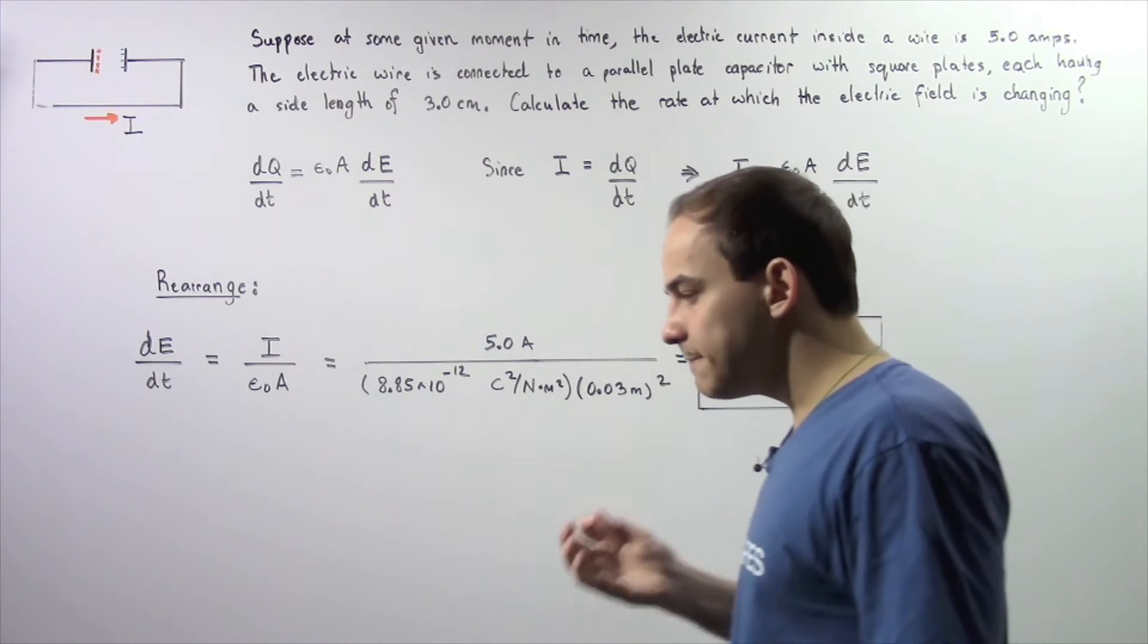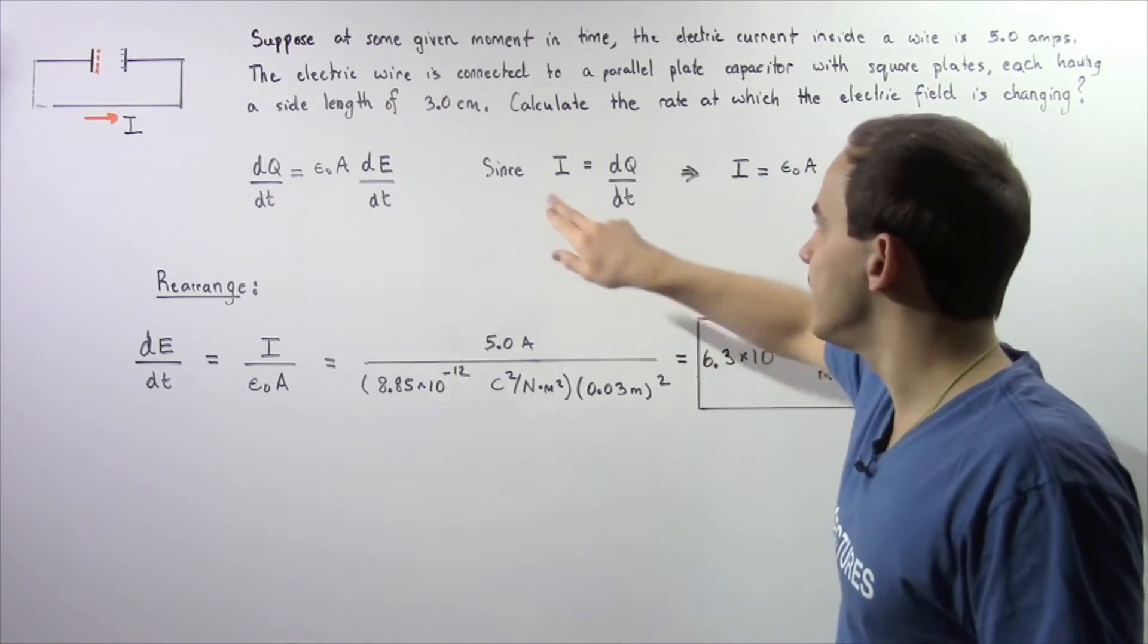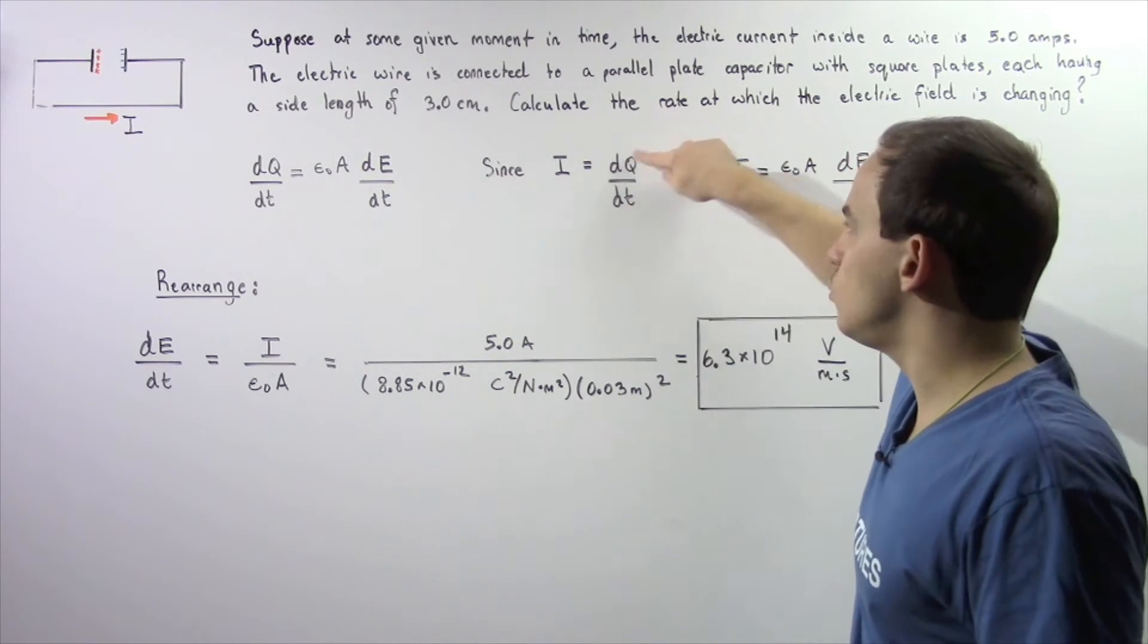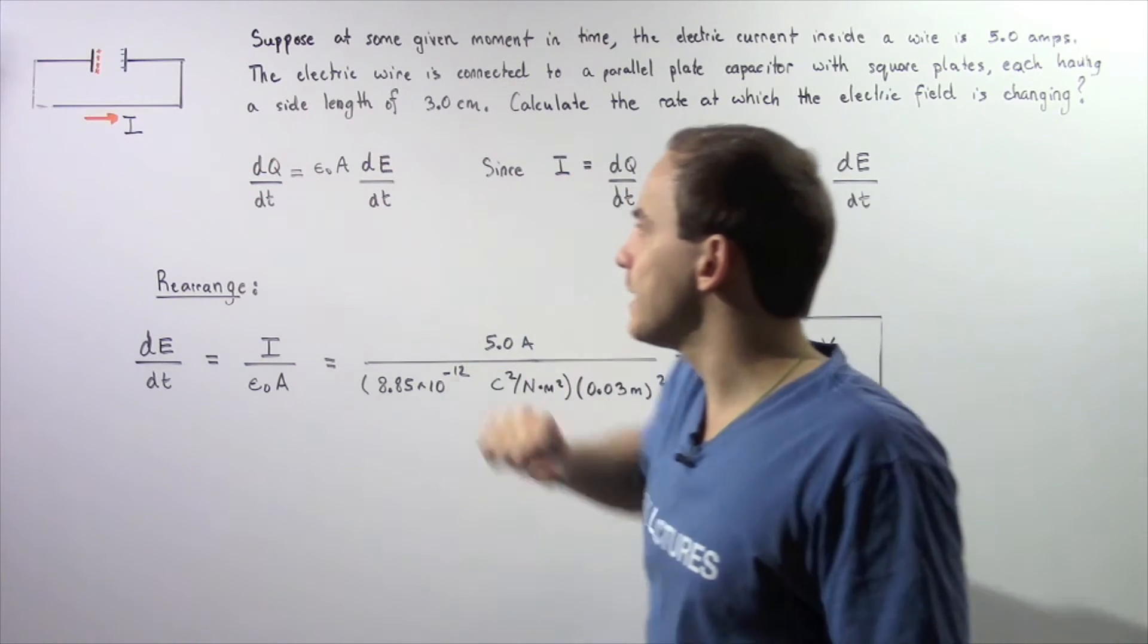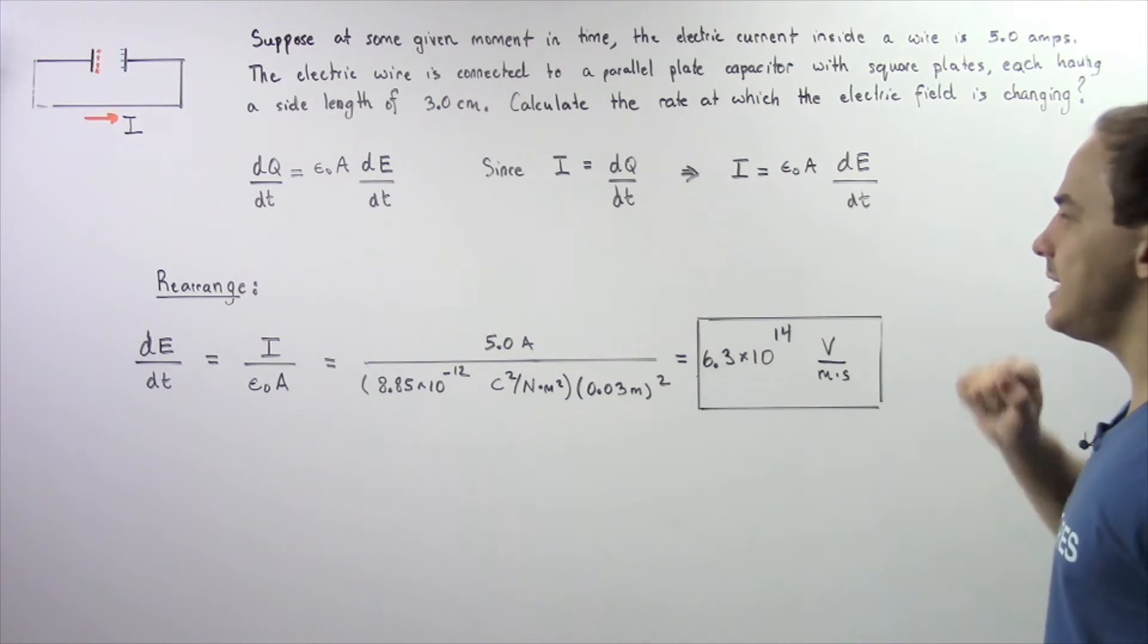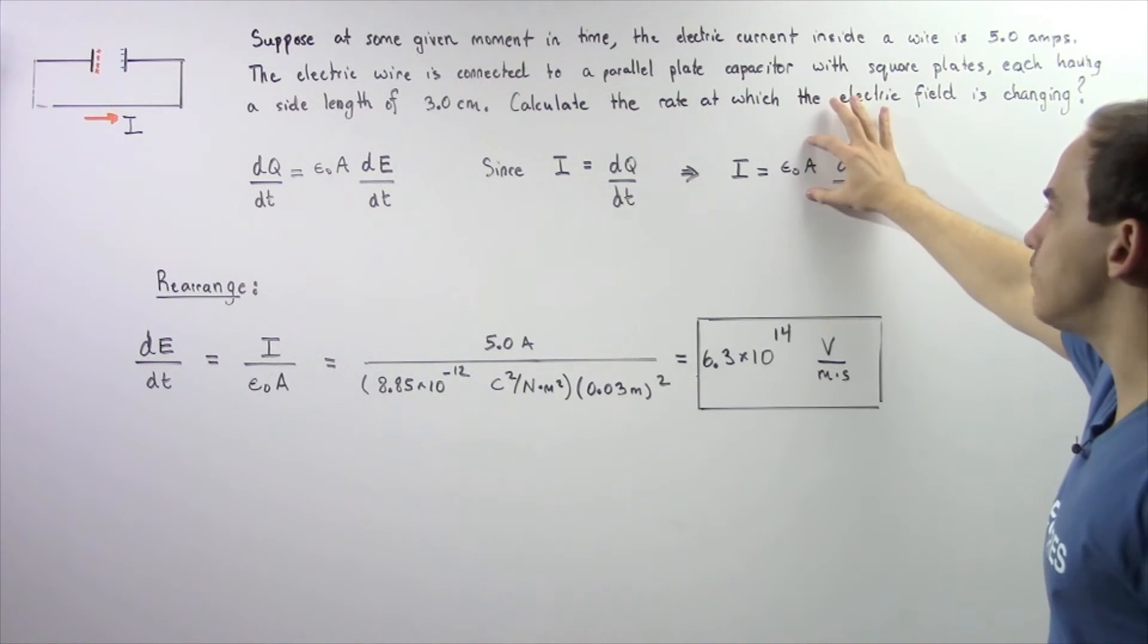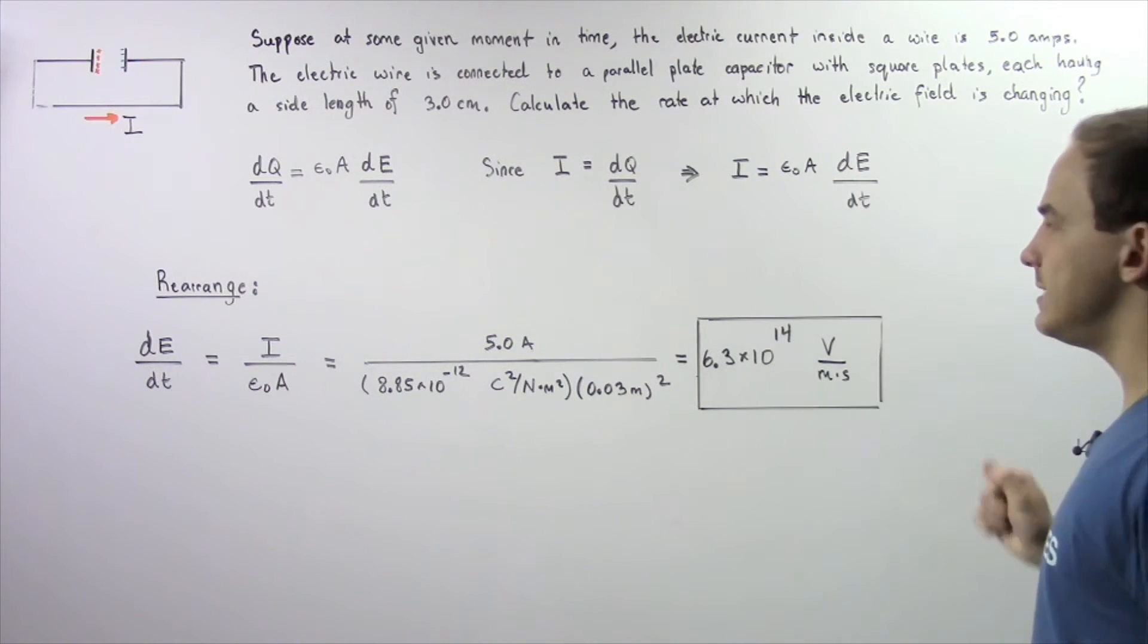Now because by definition of instantaneous electric current, I is equal to dQ/dt, we can replace dQ/dt with simply I. So I is equal to epsilon naught multiplied by the area of the plates multiplied by the quantity that we're looking for, dE/dt.